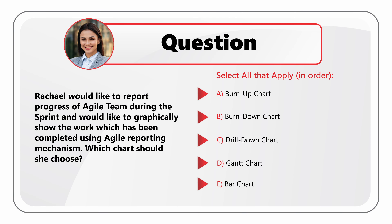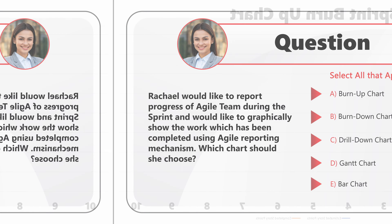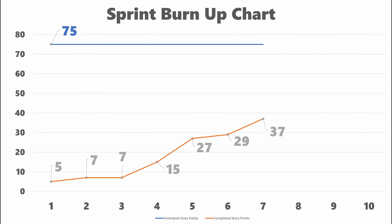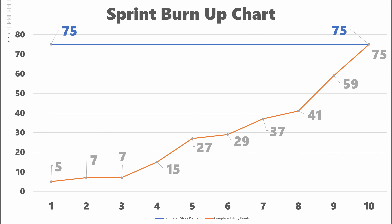I think the correct answer here is Choice A: Burn-up chart. The burn-up chart represents how much work has been completed on the project. It typically shows how many story points were estimated for the sprint and how many of them were gradually completed throughout the sprint.